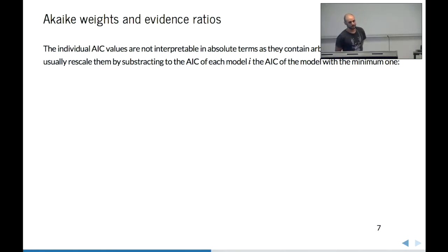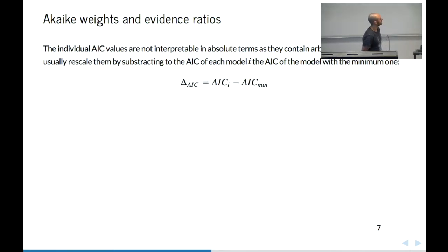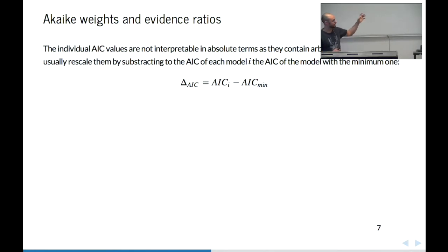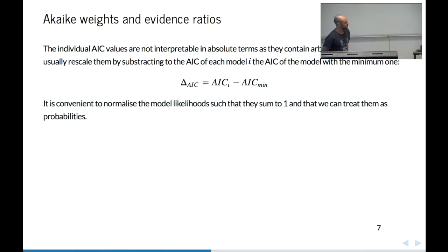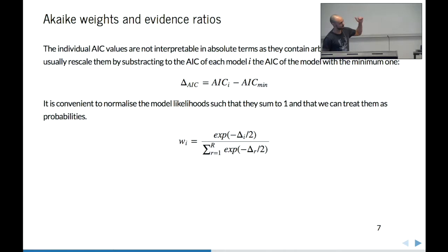You should not interpret the AIC in absolute terms because it depends heavily on the size of the dataset, so we usually rescale AIC values by subtracting from each AIC value the AIC of the model with the minimum value. So the delta score of the best model will be zero, and all other delta scores will be deviations from the best model. Then we can normalize these delta scores to obtain what we call Akaike weights, where each model has a weight that can be interpreted as the probability of that model being the best AIC model in the set.